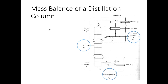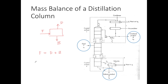We can draw this in a simpler block diagram form with F coming in, D going out, and B going out. We can write the general mass balance equation for this unit as simply F equals D plus B — in other words, whatever comes in equals whatever mass goes out. We can also write another mass balance equation for the moles of one of the components in the process.